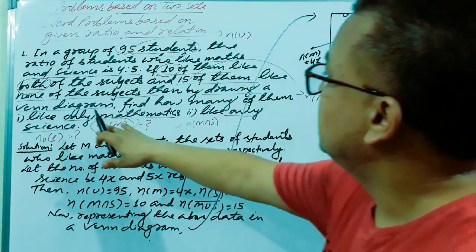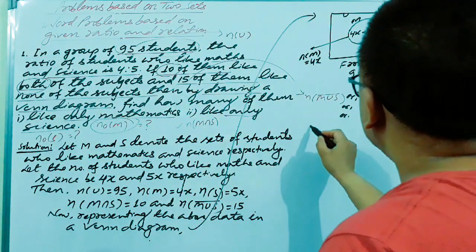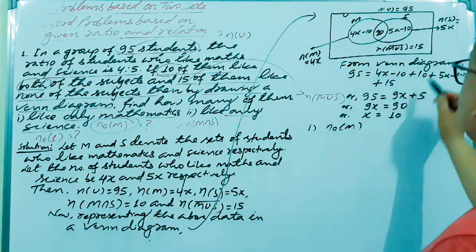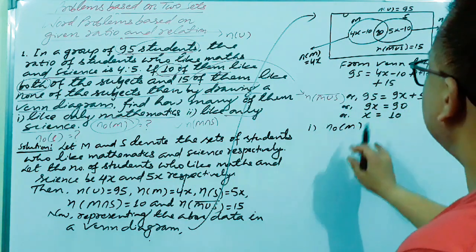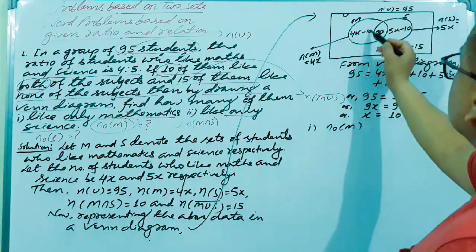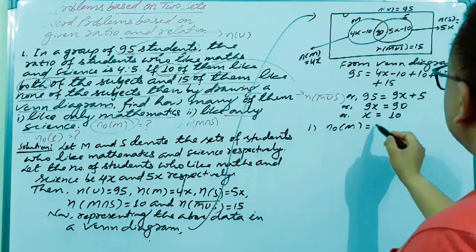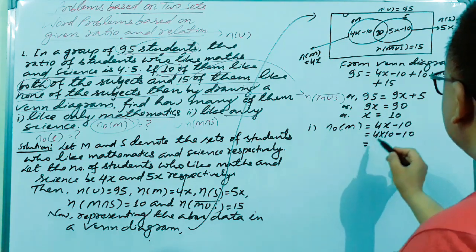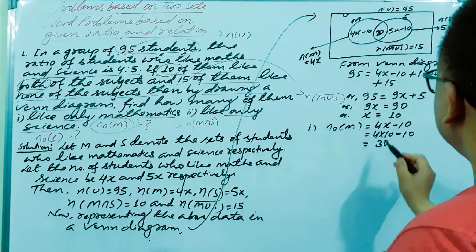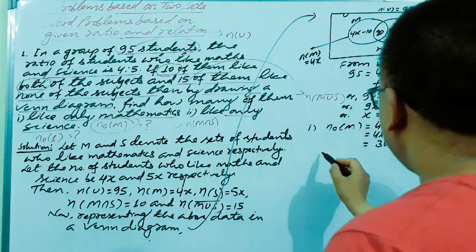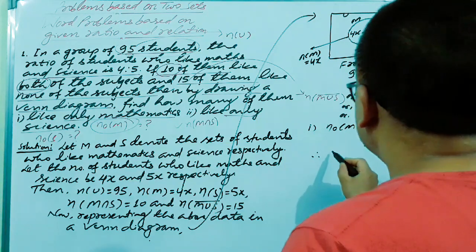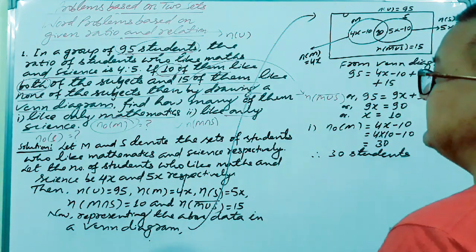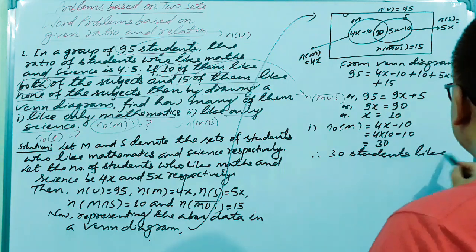From the Venn diagram, only mathematics equals 4x minus 10. Substituting x = 10 gives 4 × 10 − 10 = 40 − 10 = 30. Therefore, 30 students like only mathematics.